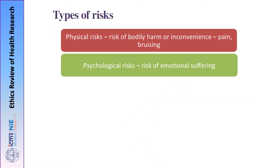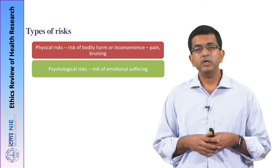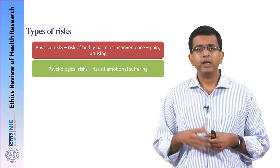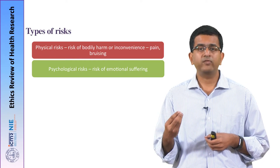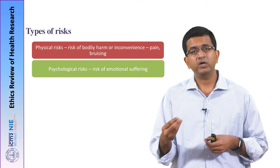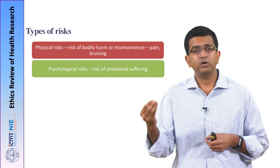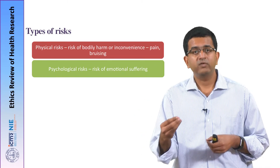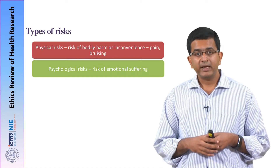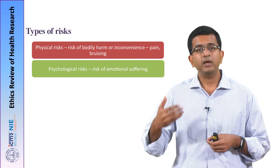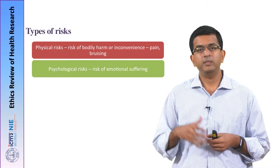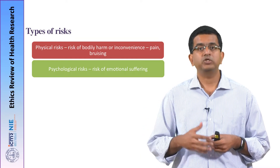Then there can be psychological risks — for example, emotional harms. One typical example is in qualitative research studies of emotional situations where participants have recently suffered the loss of a near and dear one, or a mother who has delivered a stillborn baby. If research is done on such a participant, it is likely that painful memories may be rekindled and they may be subject to emotional harm and emotional suffering — that is psychological risk.